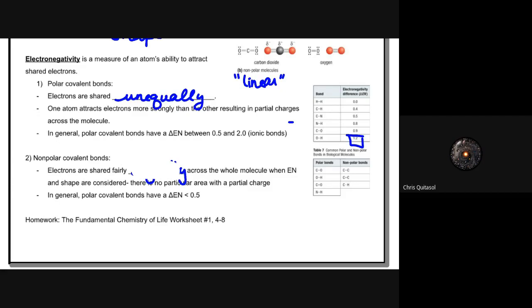Non-polar covalent bonds are where electrons are shared fairly equally across the whole molecule. So when electronegativity and shape are considered, there's no real particular area that has a partial charge. These are what's called those polar covalent bonds having a delta energy of under 0.5.